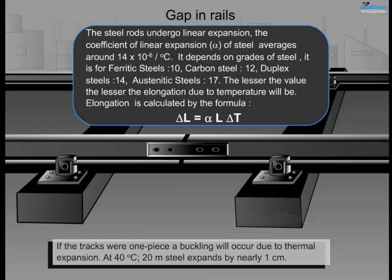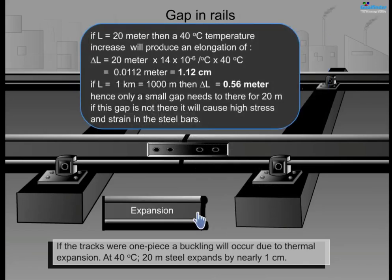If the track is one continuous piece, buckling will occur due to thermal expansion. At 40 degrees Celsius, a 20-meter steel rail expands by nearly one centimeter. For example, if L = 20 meters, a 40°C temperature increase produces an elongation of ΔL = 20 m × 14 × 10⁻⁶ /°C × 40°C = 0.0112 meters, that is 1.12 centimeters.